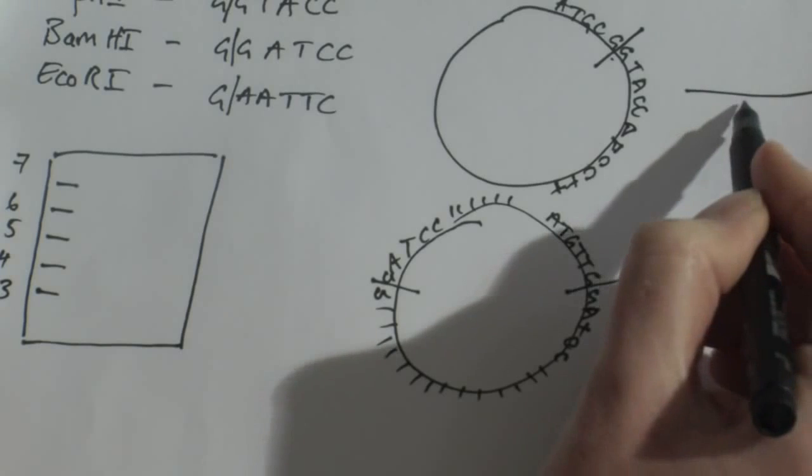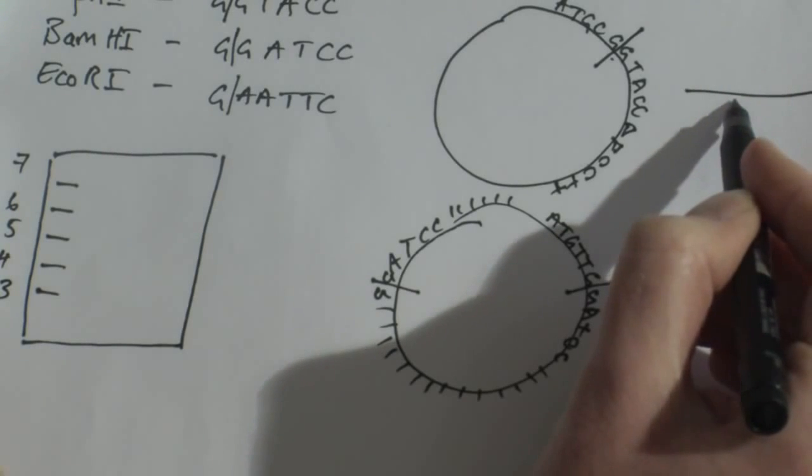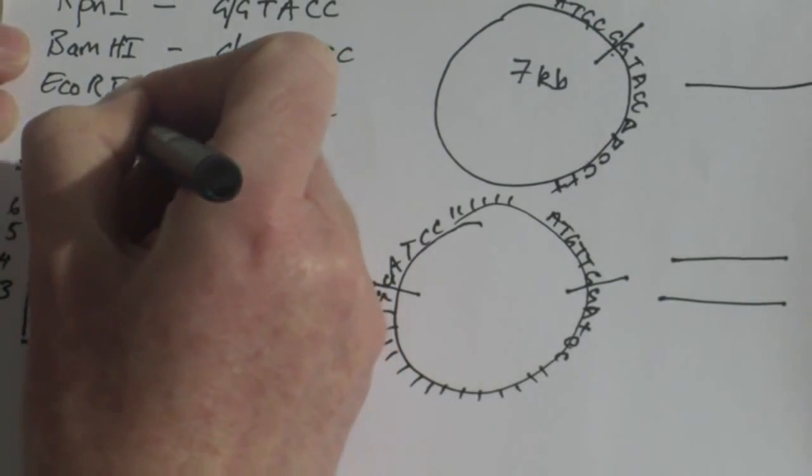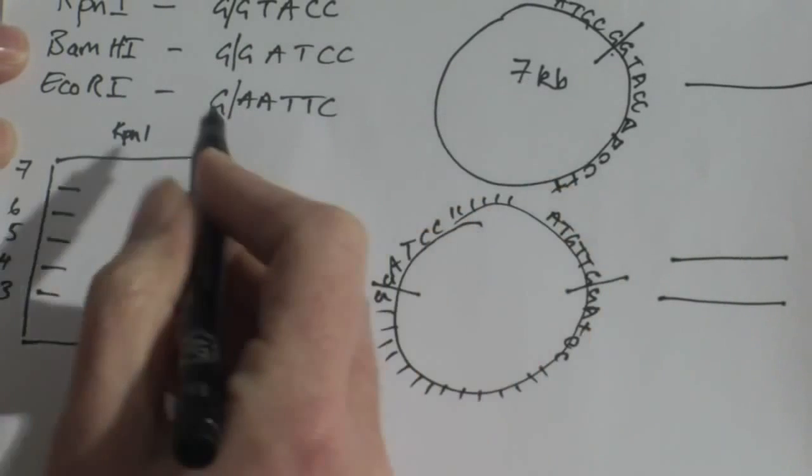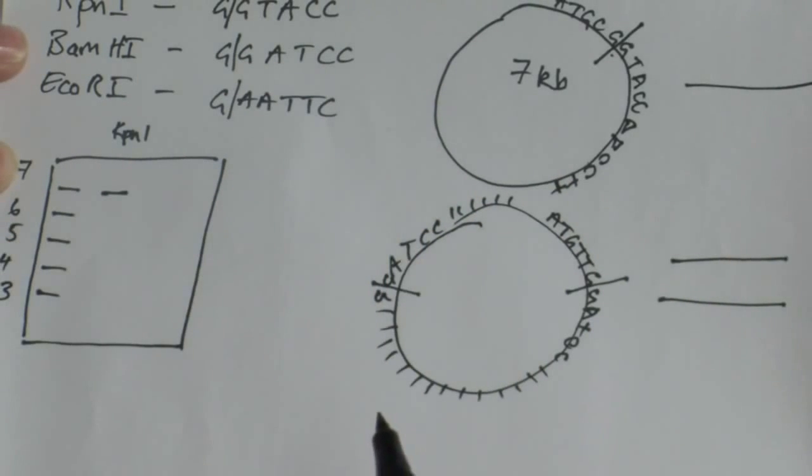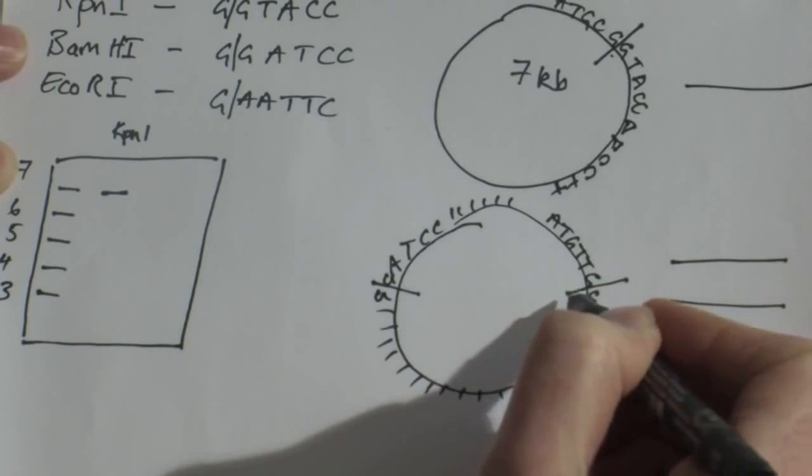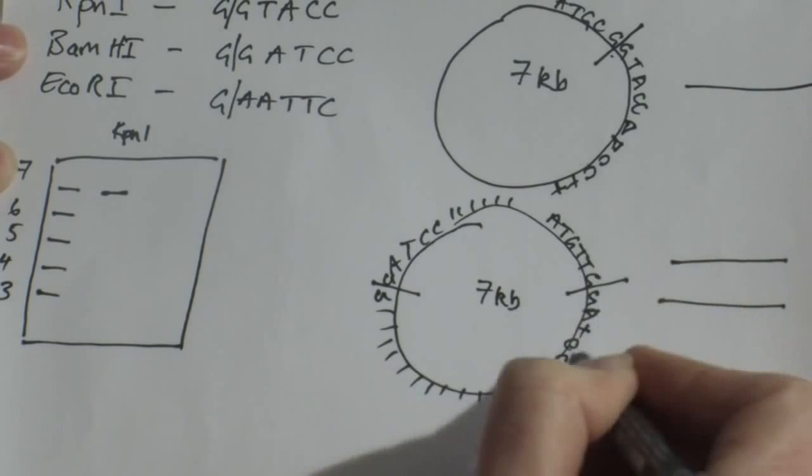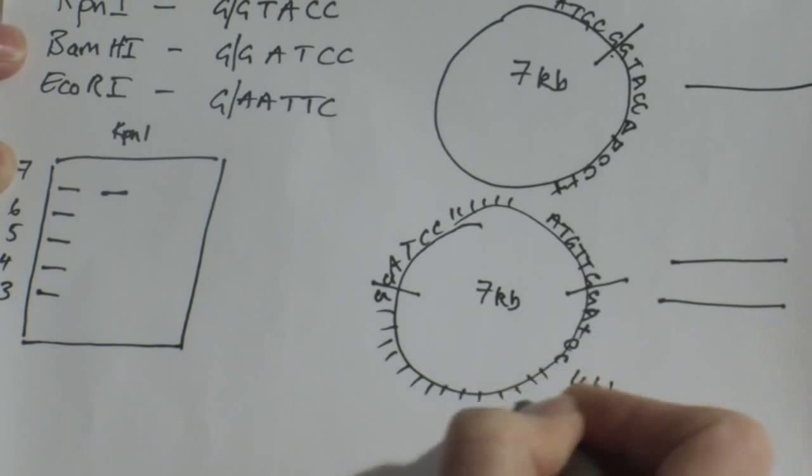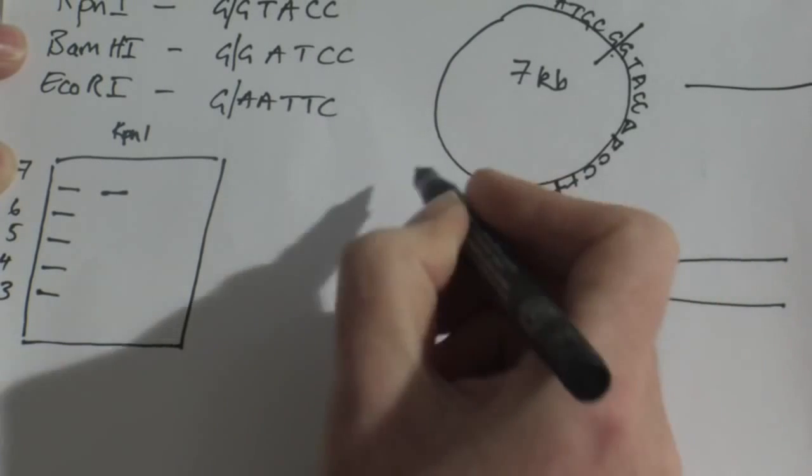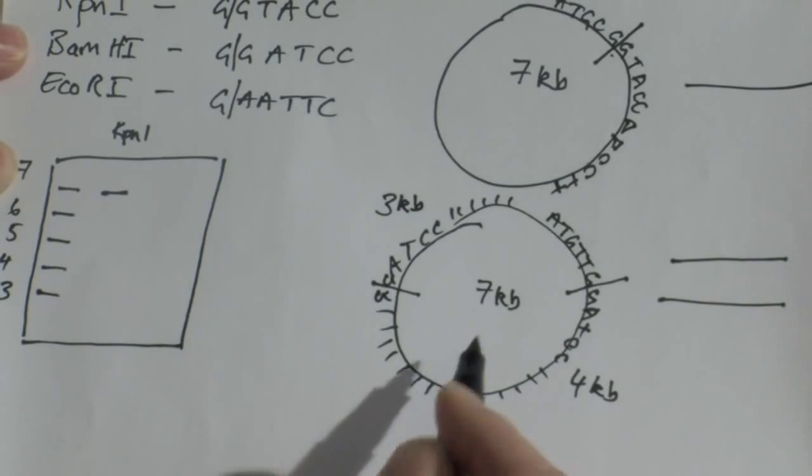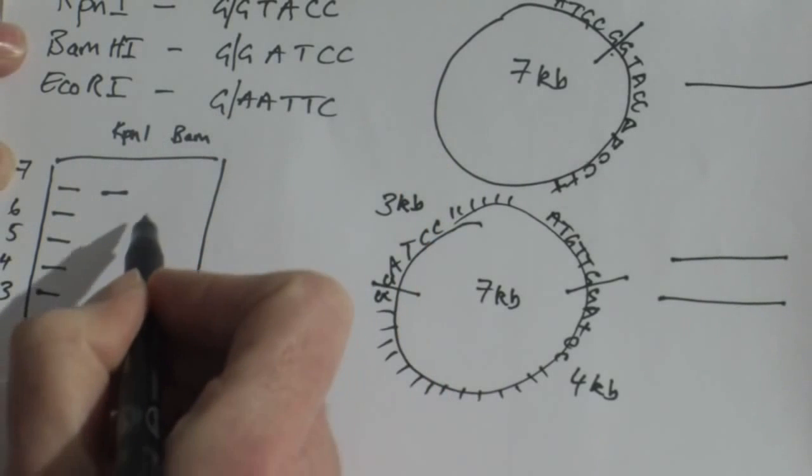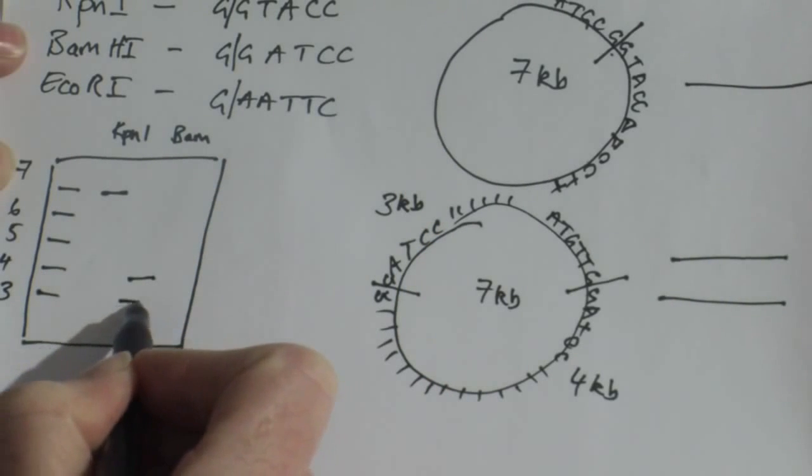Only when I ran this sample here on an agarose gel, let's say it's a seven KB plasmid, would I know that by cutting with KPN1 I have achieved a single fragment of DNA at seven kilobases. My BAMH1 enzyme cut here and it cut my plasmid into two fragments. Let's say this one was four KB from here to here is four KB and from here to here was three KB. And only when I ran this on an agarose gel would I be able to see that I have actually got two fragments, one of them was four KB and one of them was three KB.